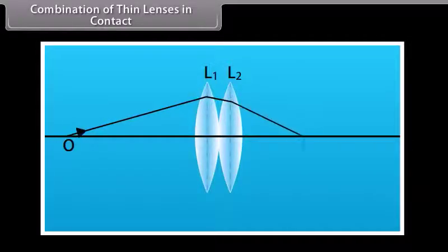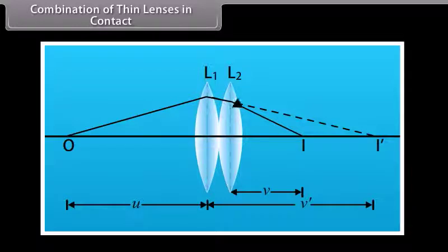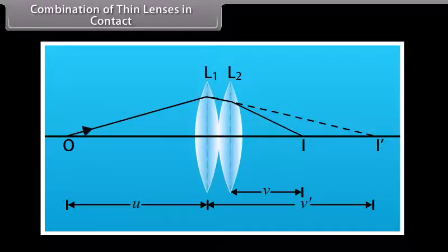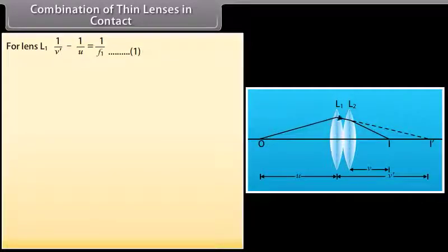Combination of thin lenses in contact. Suppose two thin convex lenses L1 and L2 are placed in contact with a common axis. Their focal lengths are F1 and F2 respectively, and the medium is the same on both sides. O is a point object on the principal axis at distance U from L1. The lens L1 forms an image at I'. If V' is the distance of image I' from L1, then for lens L1: 1/V' − 1/U = 1/F1 (Equation 1).